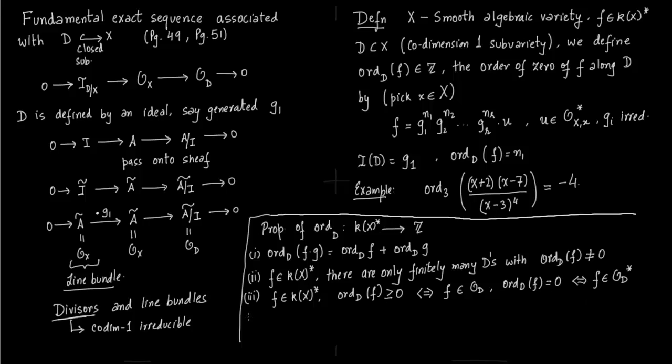And it's 0 if and only if it's part of the unit. If it's a unit, then obviously you don't have any polynomial. Unit means you just have u in the factorization of f. u does not contribute anything to the order.